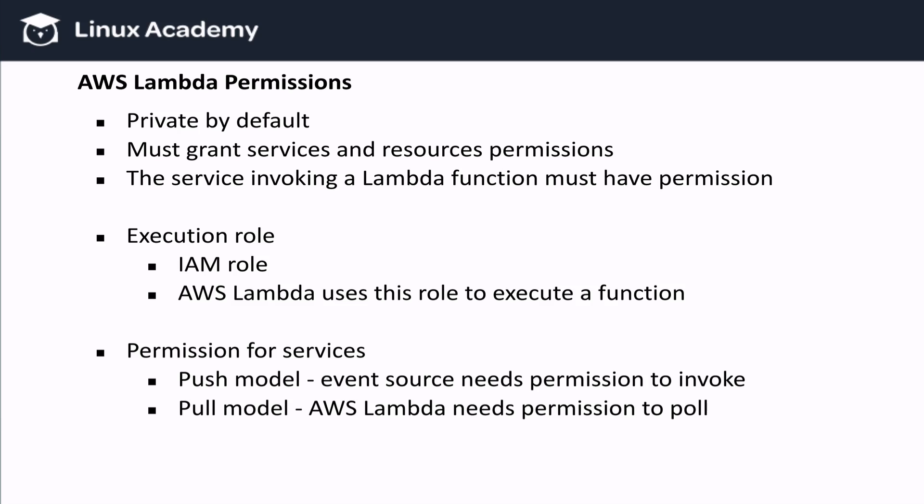The way that we set up permissions is slightly different depending on the model. For the push model, the event source needs permission to invoke our Lambda function. However, with the pull model, AWS Lambda needs the permission to pull a service like the DynamoDB stream, and you could grant that permission in the same IAM role that you created for AWS Lambda to use when executing your function. Again, this will make a lot more sense when we do it hands-on, but understanding the basics will prepare you for that.